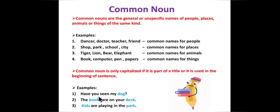Example: 'Have you seen my dog?' Here we are talking about the dog. Dog is a common noun — we have not specifically mentioned this black dog, this brown dog, or a particular breed of dog. We are talking about the dog in general.